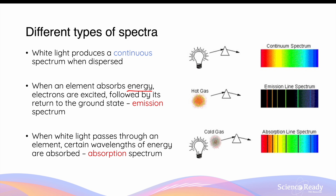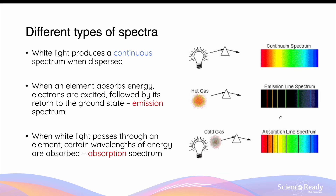When white light from a light bulb that produces a continuous spectrum is passed through the same element — but this time it's not heated — it will produce what we call an absorption spectrum. The electrons in this element will absorb energy from the white light, and the amount of energy absorbed is specific to the difference in energy levels between the orbits in this element. The absorbed energy will appear as black lines in the absorption spectrum, called absorption lines. You may notice that the position of these absorption lines is identical to the emission lines in the emission spectrum, because the two spectra are produced from the same element.